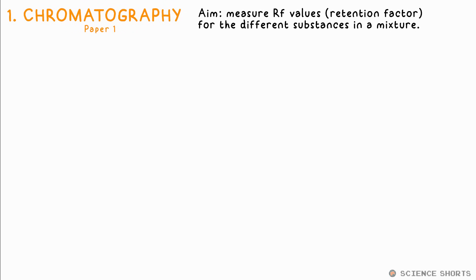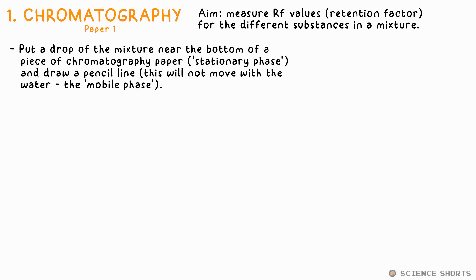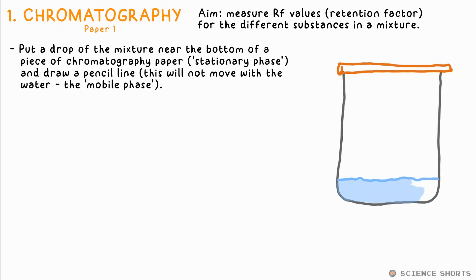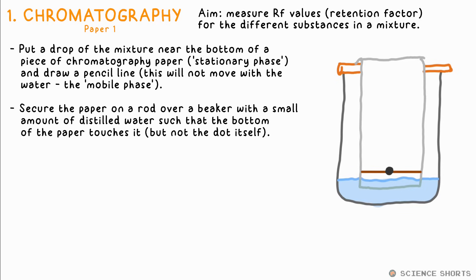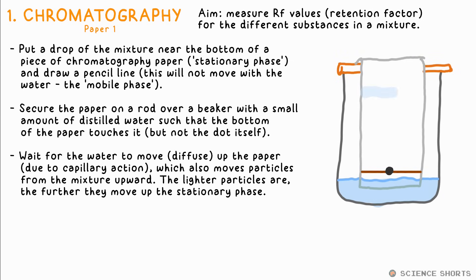Chemistry 1: Chromatography. This allows us to separate the different solutes or other particles found in a mixture. We put the spot of the solution just above the bottom of a piece of chromatography paper — filter paper also works. This is our stationary phase. We also draw a line across the paper at the same point in pencil, which will not move up with the water and acts as our reference point for measurements later. We secure the paper to a rod so it hangs down in a test tube or beaker with distilled water so the bottom just touches the water. The spot must not touch the water directly. We then wait for the distilled water to diffuse up the paper by capillary action — hence why it's called the mobile phase — which pulls particles in the mixture upwards, with lighter particles moving further up the paper than heavier ones, so they separate out.